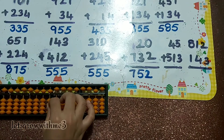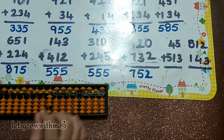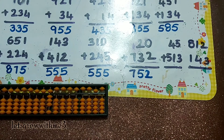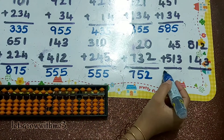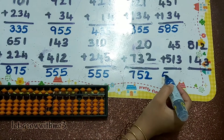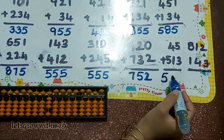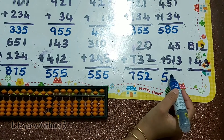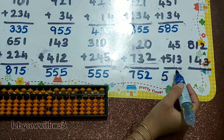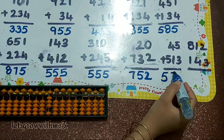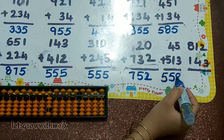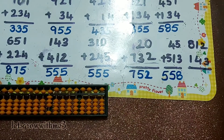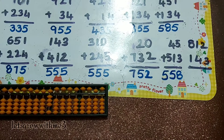Next one: 45 plus 513. How to add 1 here — plus 5 minus 4. And 3 we can add directly. Are you able to see? Yes. So our answer is 558, okay.